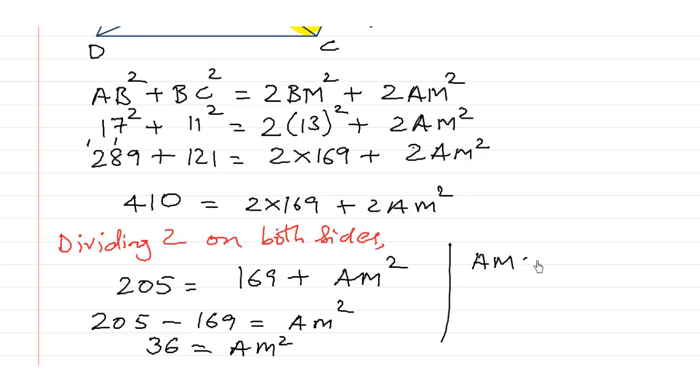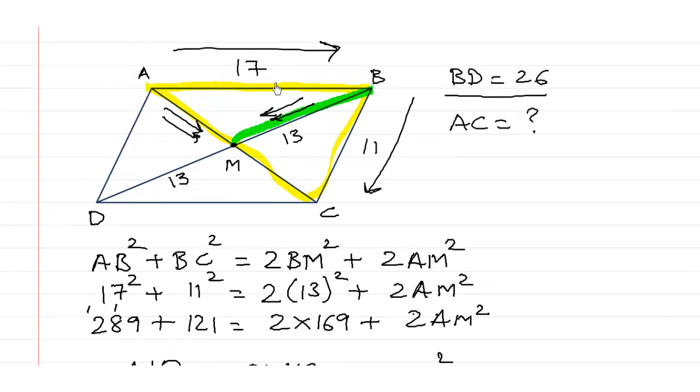So AM is equal to square root of 36, which is equal to 6. So we get AM square root of 36, so we get AM as 6. So if AM is 6, MC is also 6, because M is the midpoint.